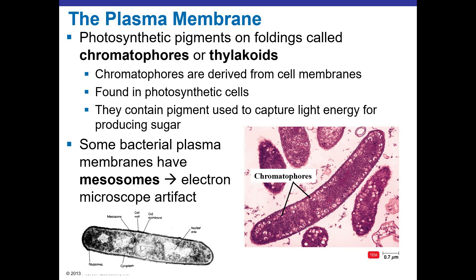Here's a little sidebar on photosynthetic pigments called chromatophores. These are foldings derived from the cell membrane, found in photosynthetic bacteria — yes, some bacteria are photosynthetic. These chromatophores are right at the edge of where the cell membrane would be, and they contain pigments used to capture light energy for producing sugar in photosynthesis.